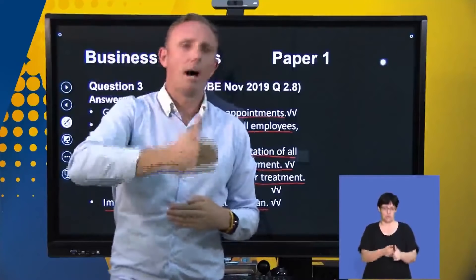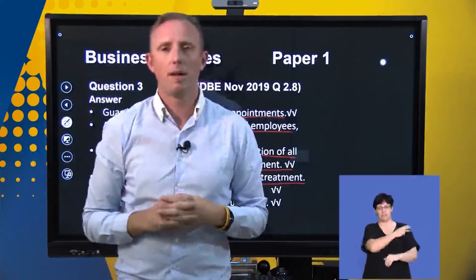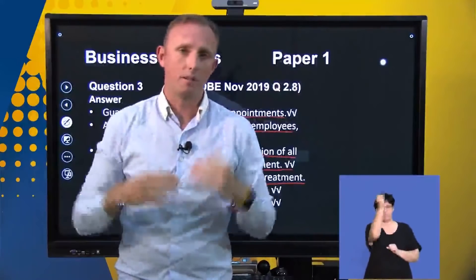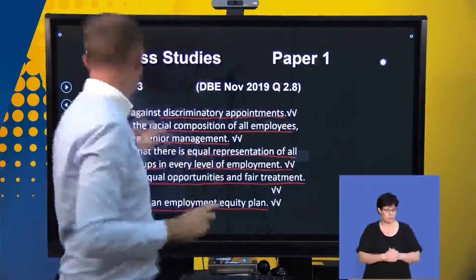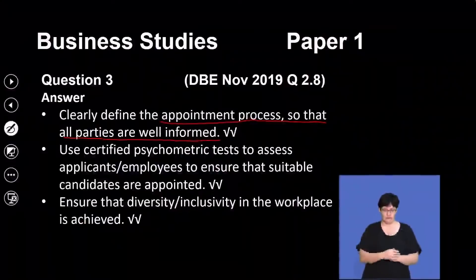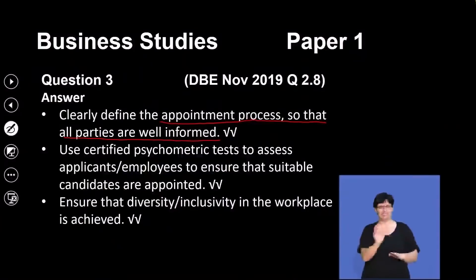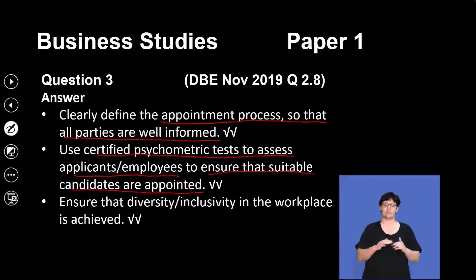By a certain year, for example, we're going to employ more women in top management. You have to hand those plans in and they'll check them to see if you are actually following through. Clearly define the appointment process so that all parties are well-informed with no miscommunication or mistrust. We use certified psychometric tests to assess applicants or employees to ensure that suitable candidates are appointed — but only when applicable to that industry.